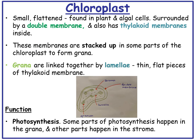Chloroplasts are small and flattened. They are found in plant and algal cells and are surrounded by a double membrane. Inside they have thylakoid membranes which are stacked up to form grana. Grana are linked together by lamellae, or intergranal lamellae, which are thin flat pieces of thylakoid membrane. The function of the chloroplast is photosynthesis — some parts of photosynthesis happen in the grana, and some happen in the stroma.